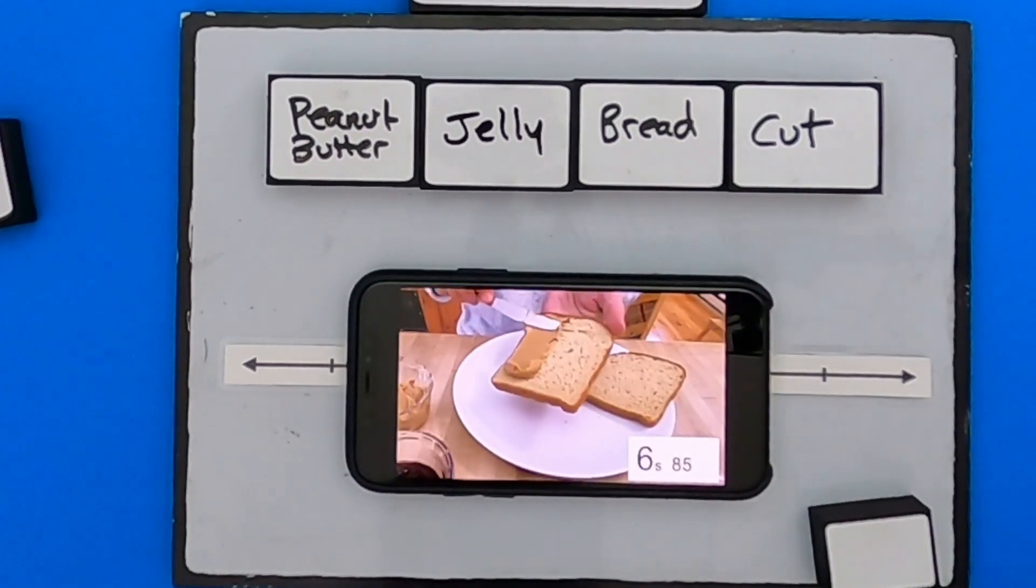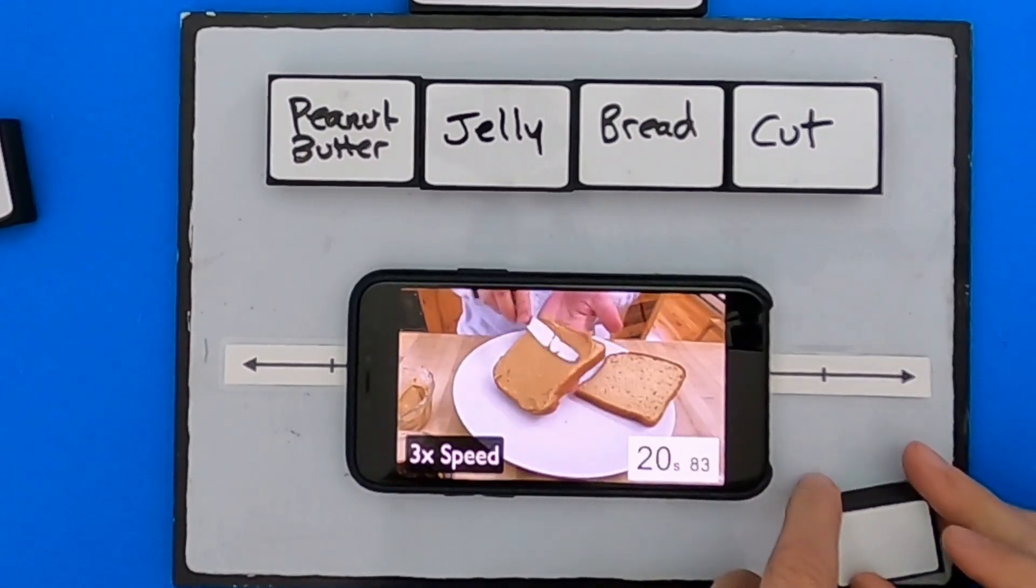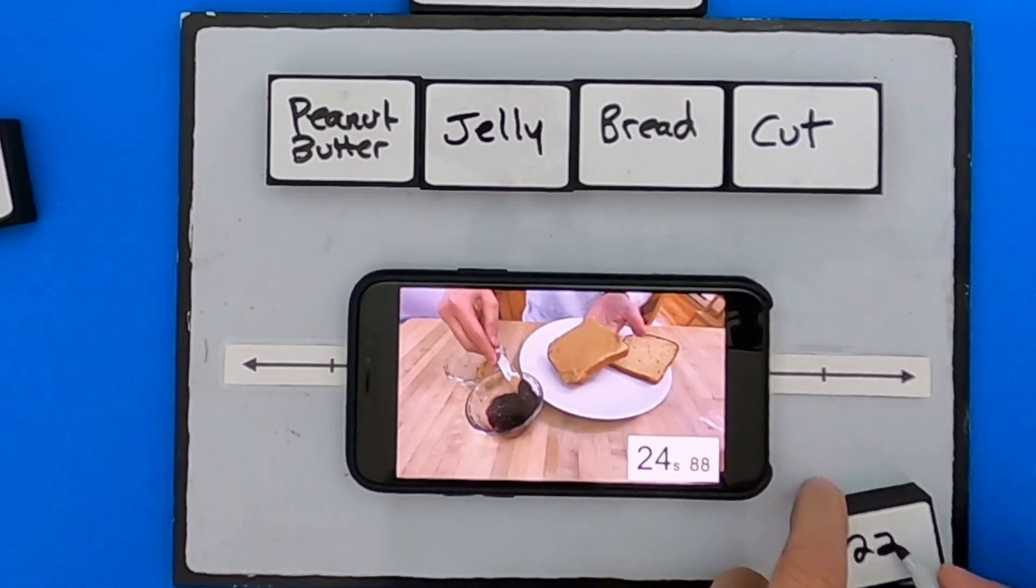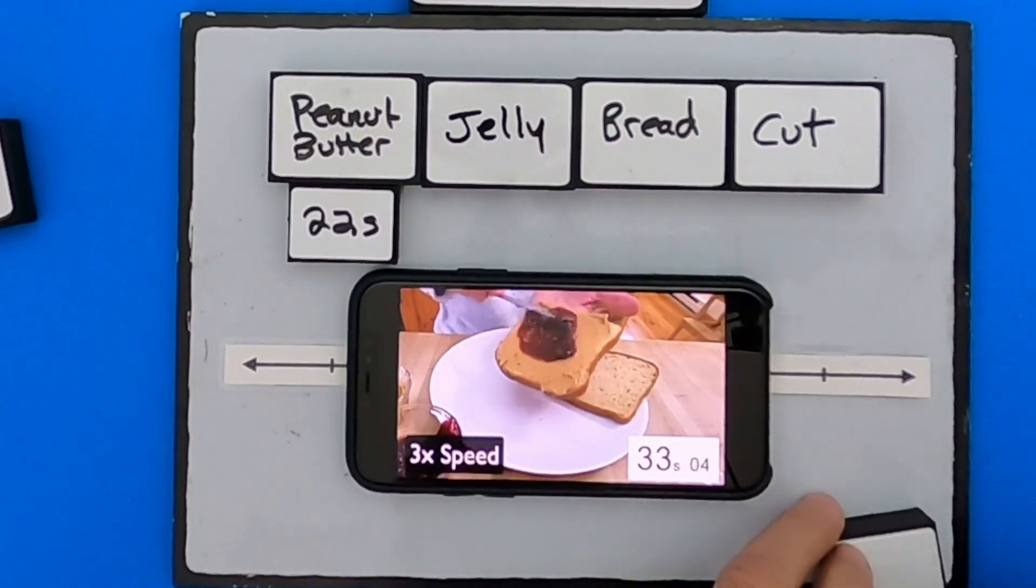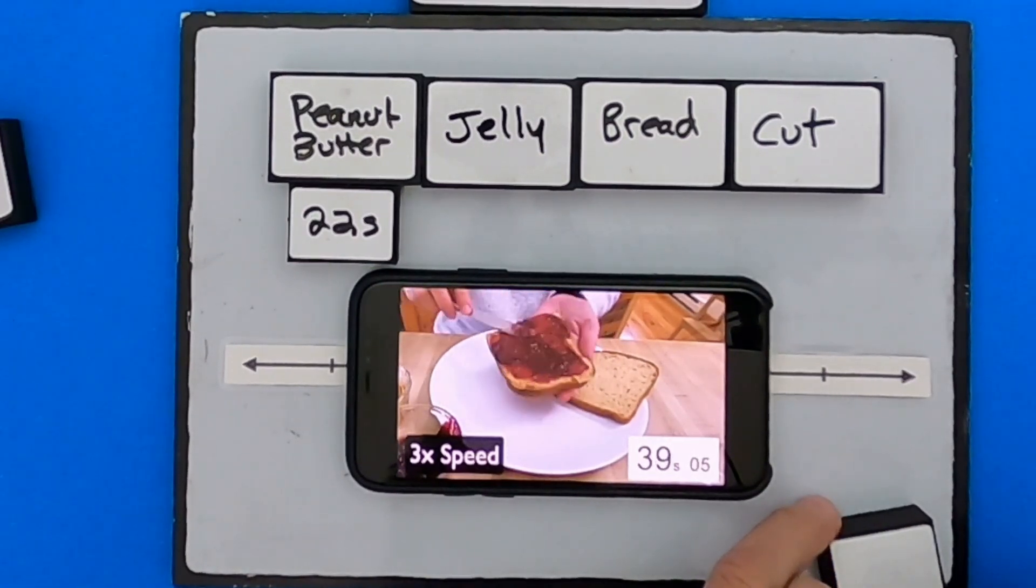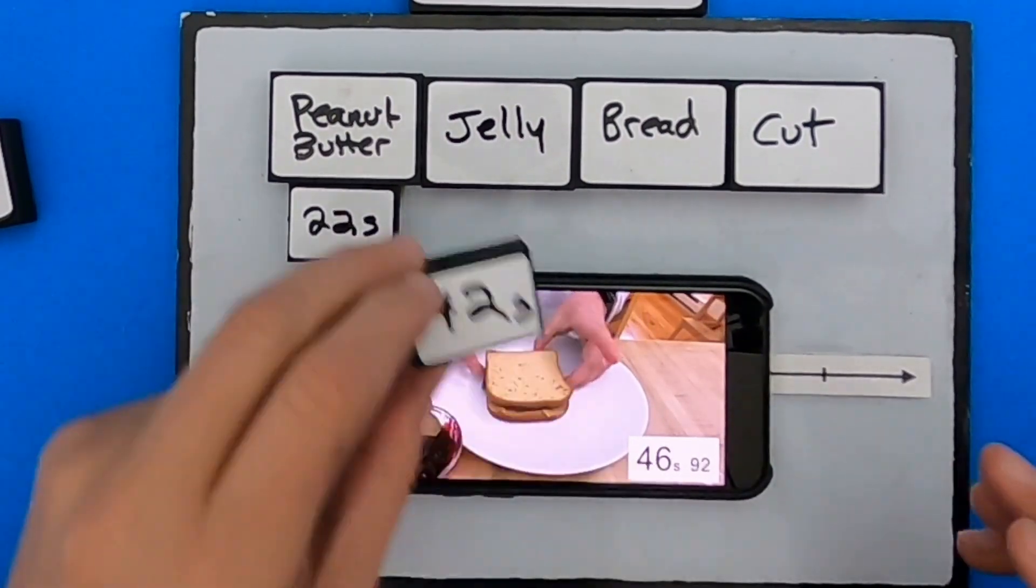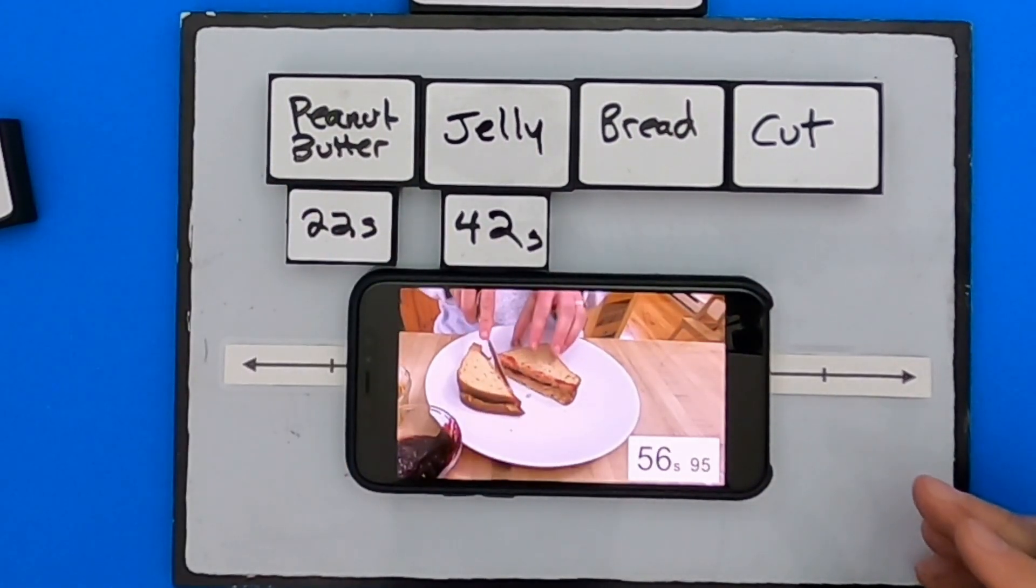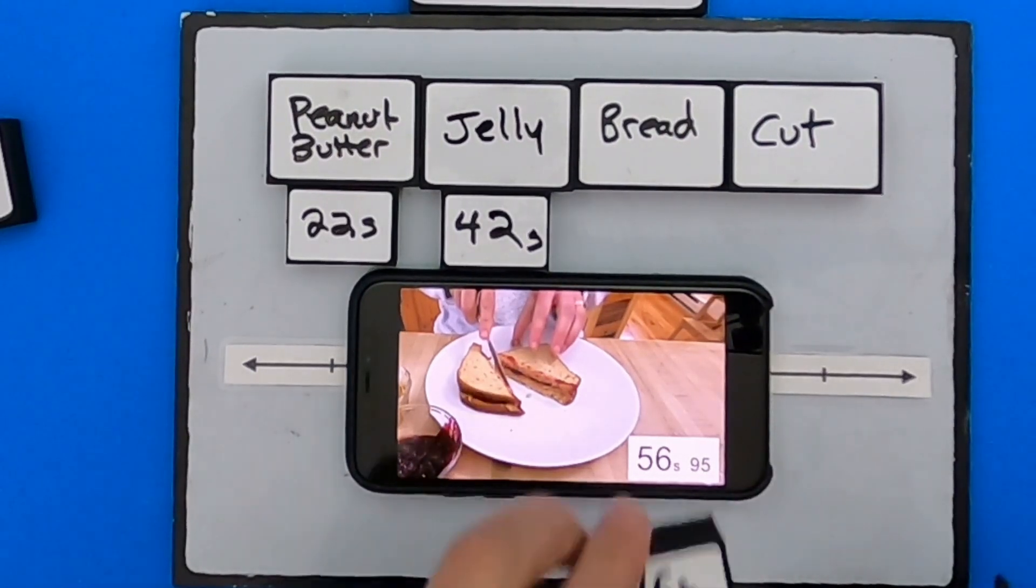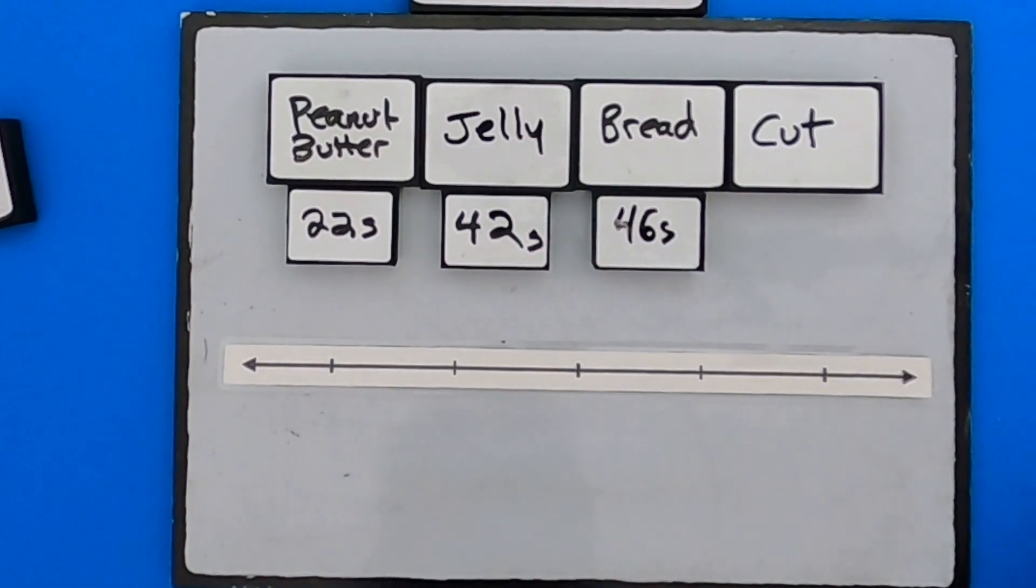So the bread's being added, or excuse me, the peanut butter is being added. This is kind of sped up. So the peanut butter is on at around 22 seconds. Now the jelly is being added. When does that finish? Looks like it's done around 42 seconds. The bread's on at 46 seconds. So let me write that down, so 46 seconds for the bread. And then the whole thing's done. Thankfully it's sitting here at 56 seconds. So 56 seconds that whole thing's going to be done.